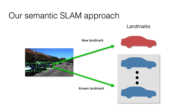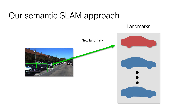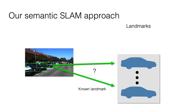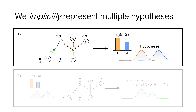Our approach proceeds as follows. When a new measurement arrives, we first decide whether it corresponds to a new landmark or a known landmark. We use a threshold on the measurement likelihood to determine whether a landmark is new or previously known. If a landmark is new, we simply add it to our map, initialized using the value of the measurement. On the other hand, if the measurement corresponds to one of the known landmarks, there might be ambiguity as to which of the known landmarks is correct. In this case, rather than selecting the single most likely association, we maintain multiple hypotheses as a mixture. In particular, given a set of candidate hypotheses, we implicitly represent the ambiguity due to this discrete decision as a continuous function.